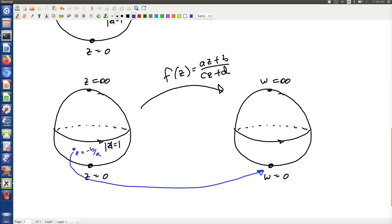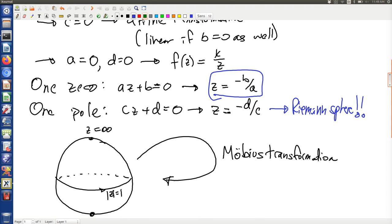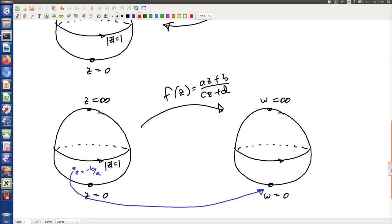Now the other guy, the pole, when z equals negative d over c, that gets mapped to the point at infinity. Wherever that is, that gets mapped to there. And the point is, all the other points go along for the ride.